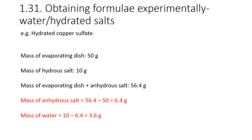For example: the evaporating dish has a mass of 50 g. We add 10 g of hydrated copper sulfate. After heating, the mass is 56.4 g. So the mass of the anhydrous salt is 56.4 − 50 = 6.4 g. The mass of water lost is 10 − 6.4 = 3.6 g. We've lost mass because without the water it should have been 60 g total.